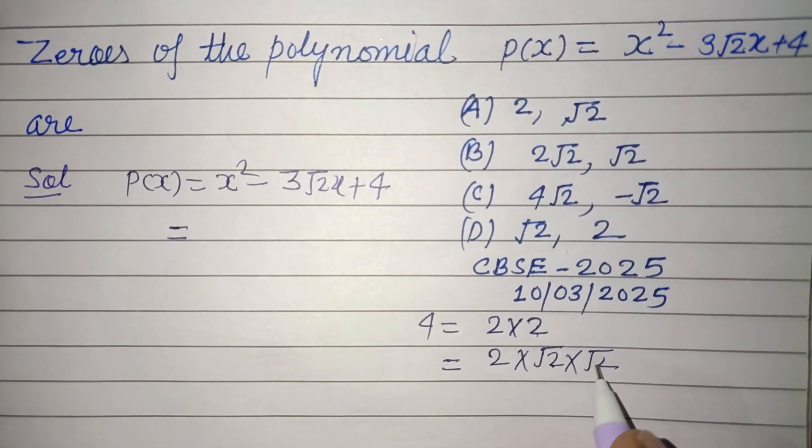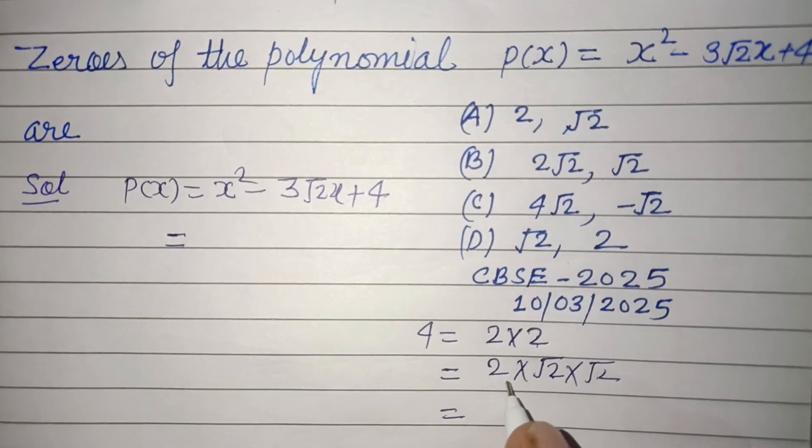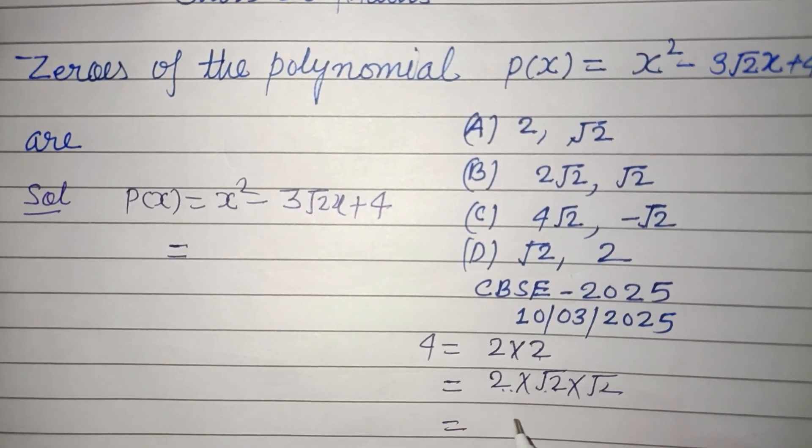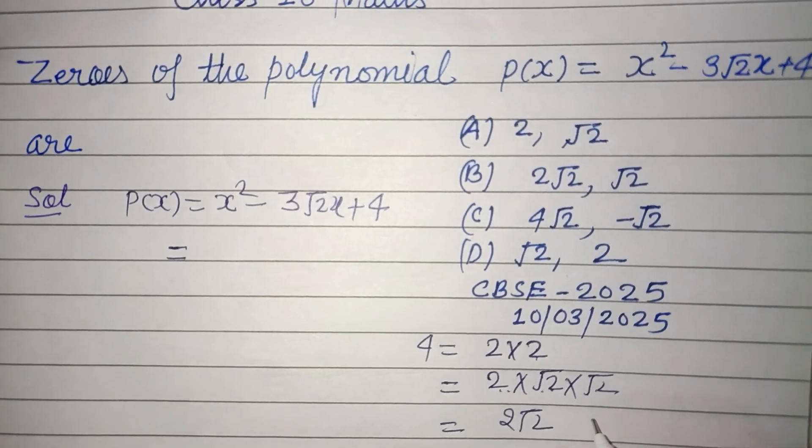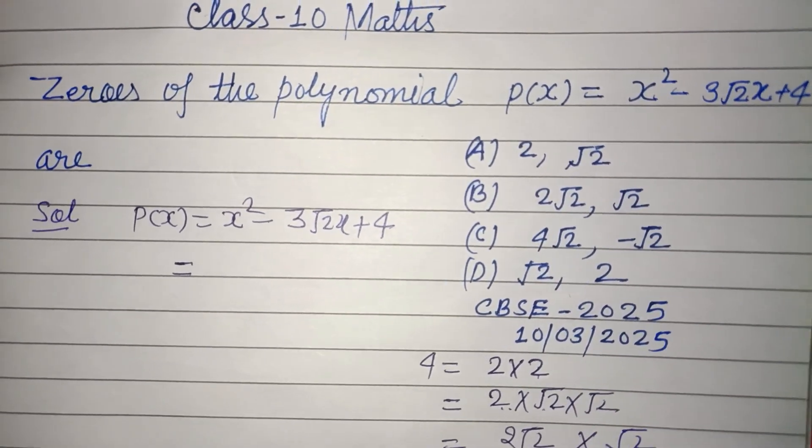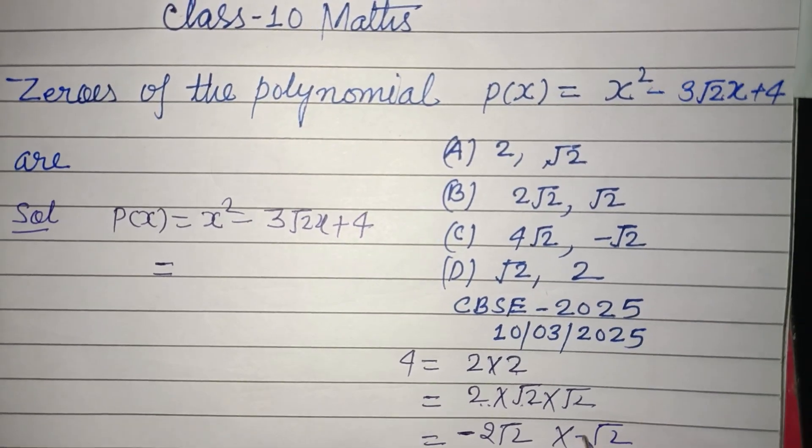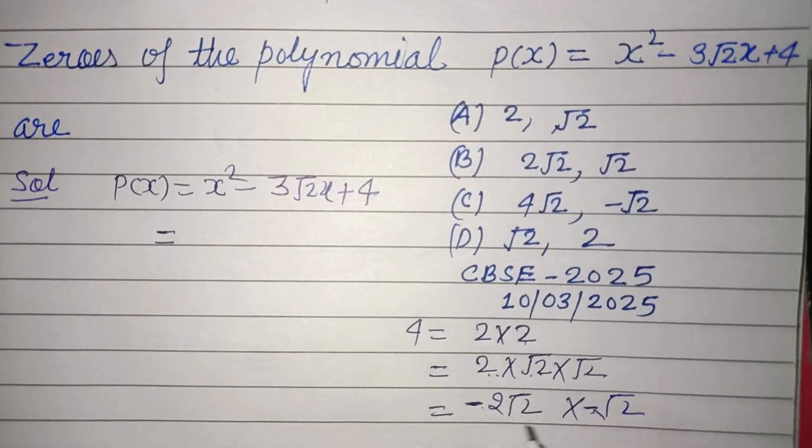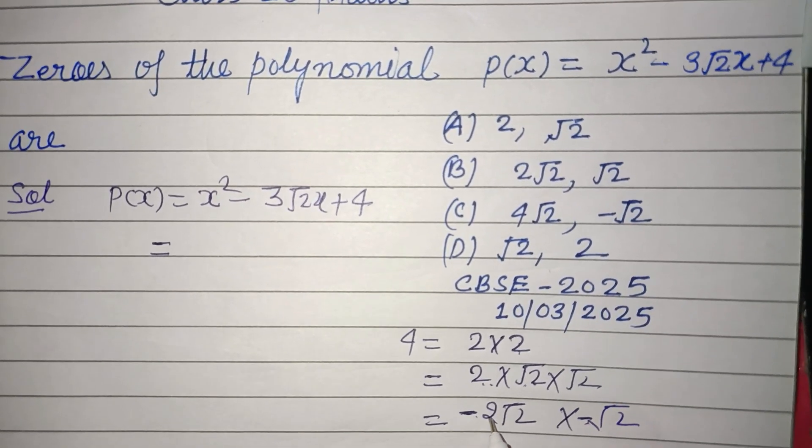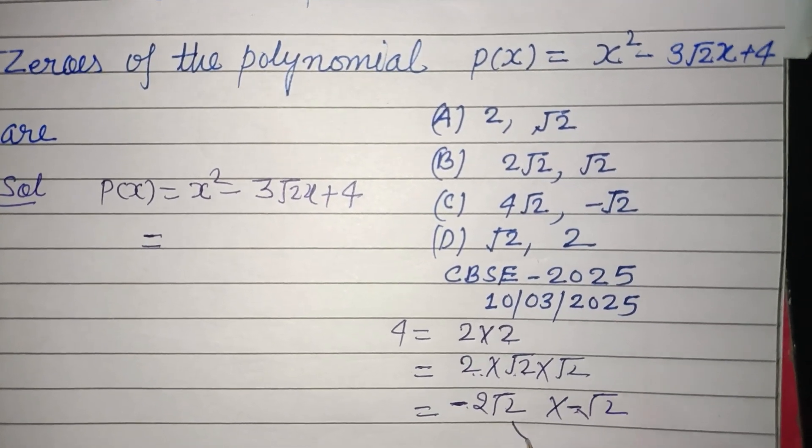Now 2√2 × √2. Here we require minus, so we take minus × minus. Minus × minus gives plus, and if we add 2√2 plus √2, we get minus 2√2 minus √2, so minus 3√2.